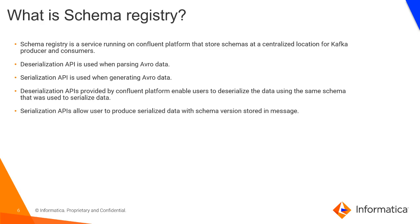The deserialization API, provided by the Confluent platform, enables users to deserialize data using the same schema that was used to serialize it. The serialization API allows users to produce serialized data with a schema version stored in the message. This schema registry works only with Avro schema, which is supported in 10.4.0.